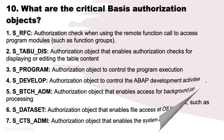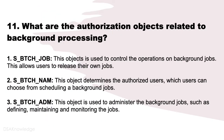What are the critical basis authorization objects related to background processing? Number 1: S_BTCH_JOB. This object is used to control the operations on background jobs. It allows users to release their own jobs. Number 2: S_BTCH_NAM. This object determines the authorized users which can be chosen when scheduling background jobs.